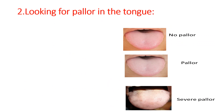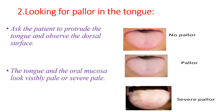The second site is looking for pallor in the tongue. Ask the patient to protrude the tongue and observe the dorsal surface. The tongue and oral mucosa appear visibly pale or severely pale in the case of anemia or decreased oxyhemoglobin. We can estimate the degree of pallor as no pallor, pallor, or severe pallor based on the color of the tongue, as seen in the image.